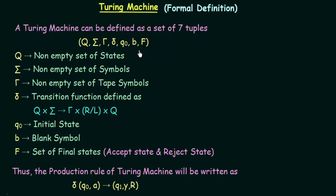Let us see what these tuples mean. First of all, we have Q, which is the non-empty set of states. As you know, Q is always used to represent the set of states, even in finite state machines and pushdown automatas. That is the same even in the case of Turing machines.